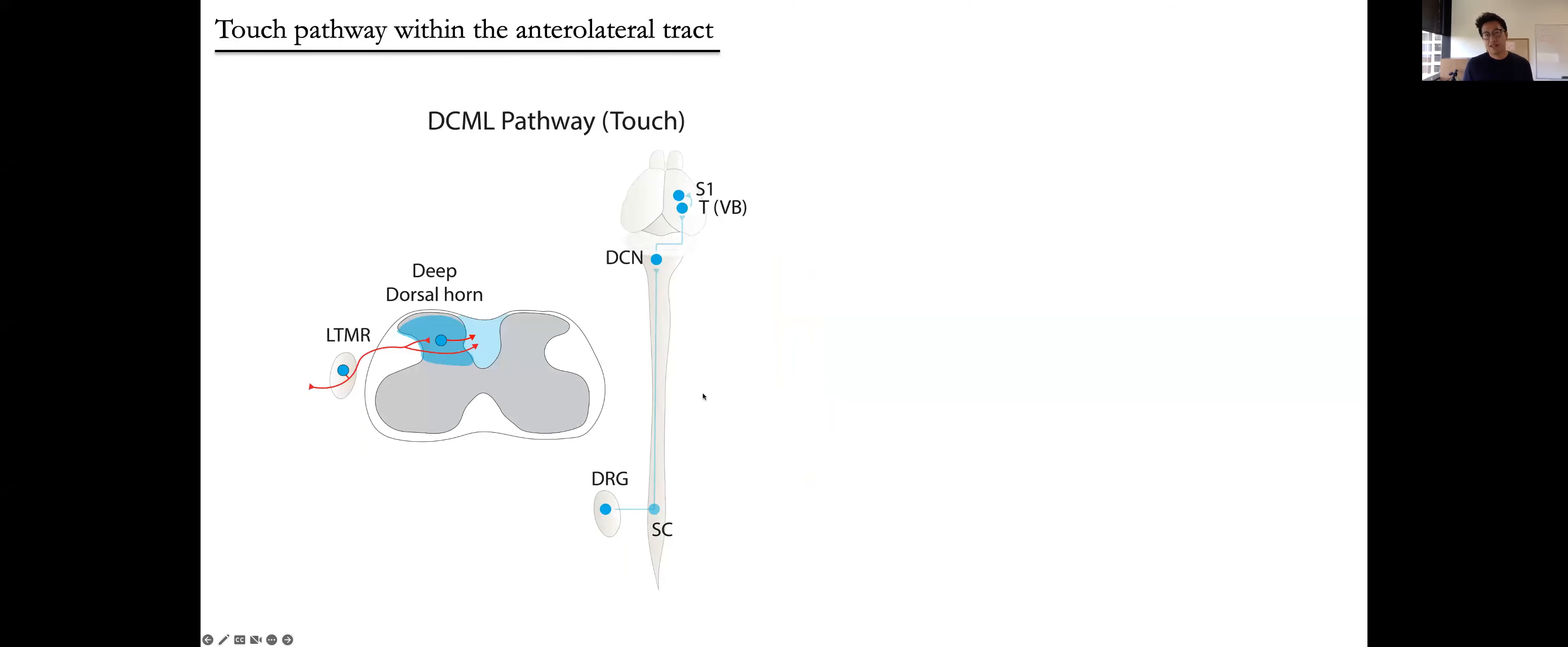The second finding was that this newly identified pathway conveys not only pain signals but also touch signals to the brain. To give you a little bit of background, the textbook view of the touch pathway emphasizes the dorsal column medial lemniscal pathway, where touch signals are first detected by low-threshold mechanoreceptor neurons, gentle touch neurons.